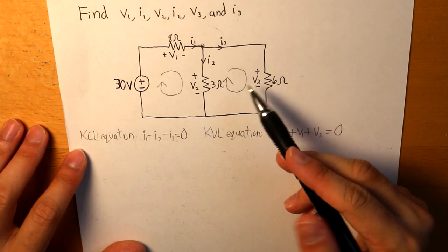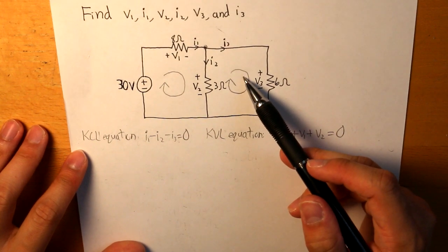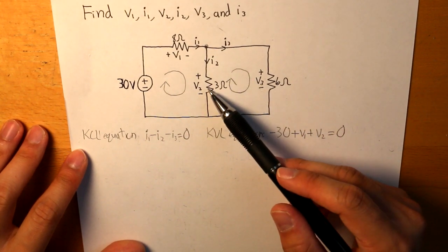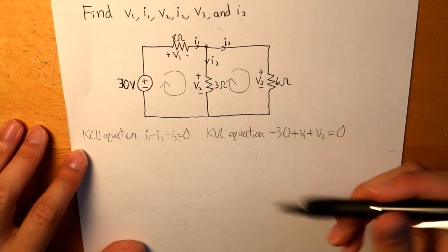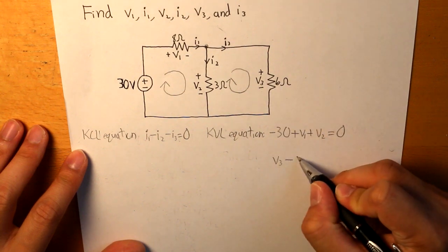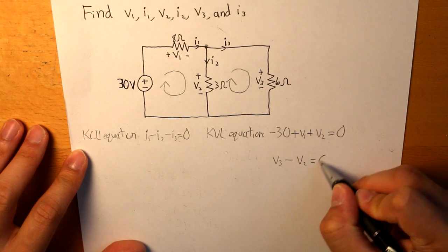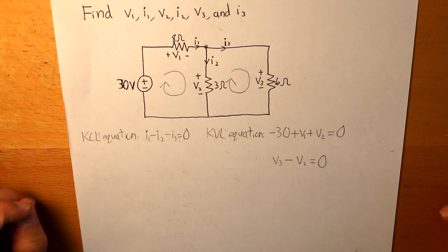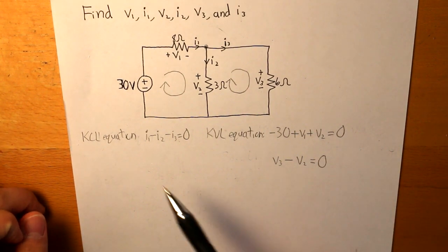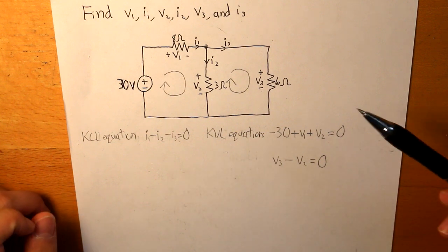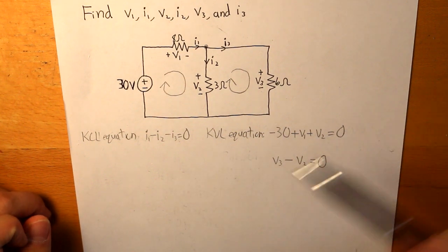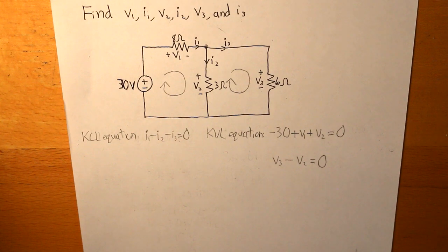And then our second equation would be V3 minus V2 is equal to 0. Now we can determine what the currents or voltages are. And in this example, let's find what the currents are, because that's a little more easier.